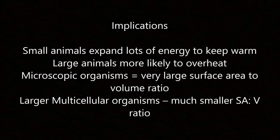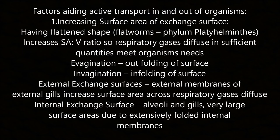Implications include that small animals expend lots of energy to keep warm and large animals are more likely to overheat. Microscopic organisms have a very large surface area to volume ratio, whereas larger multicellular organisms have a much smaller surface area to volume ratio.